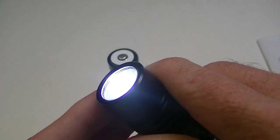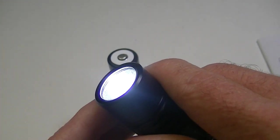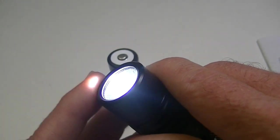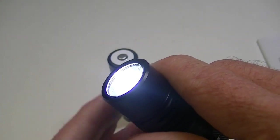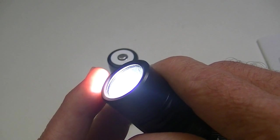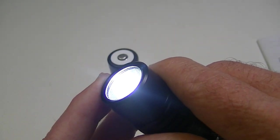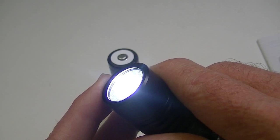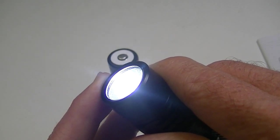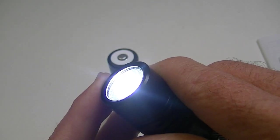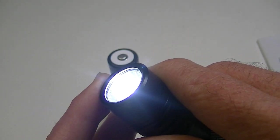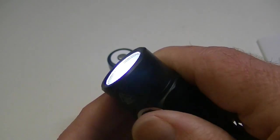I believe there were seven outputs on here which were already programmed, which is like a moonlight - and you can sort of figure them out however you want: moonlight, low, medium, medium. I think there were maybe two highs and then a turbo. So it goes anywhere from about two lumens up to 2000.